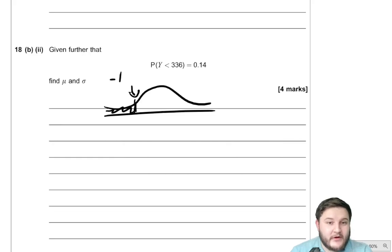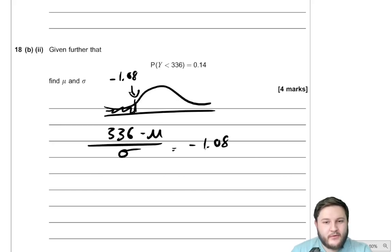Well, it is negative 1.08. So again, we can do exactly the same setup where we do 336 take away mu over sigma must be equal to negative 1.08. So we get 336 take away mu is equal to negative 1.08 sigma.